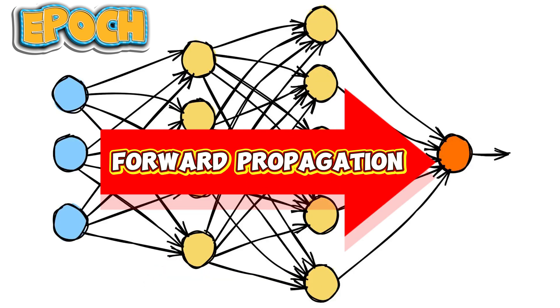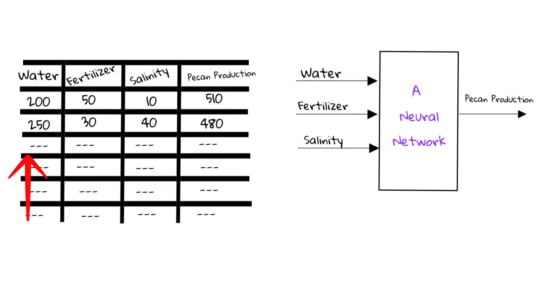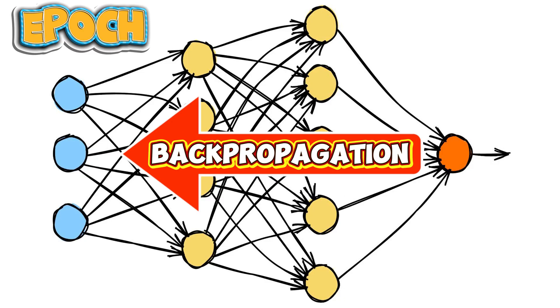An iteration over the entire dataset is called an epoch. In neural network terminology, an epoch refers to the completion of a full forward pass on the training data followed by a complete backpropagation to adjust the weights and biases.